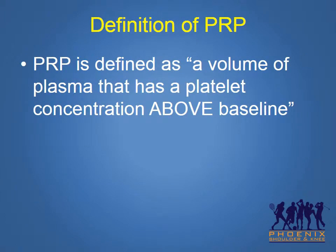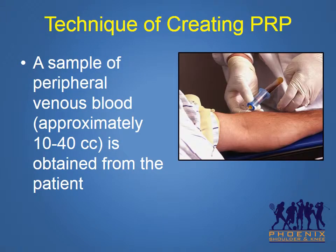PRP is defined as a volume of plasma that has a platelet concentration above baseline. The creation of PRP therefore basically involves concentrating the platelets in a sample of normal blood. In order to create PRP, the first step involves taking a specimen of blood from the patient, much like when you go to get blood tests at your primary care doctor's office. Typically one to two small vials of blood are required to create PRP.